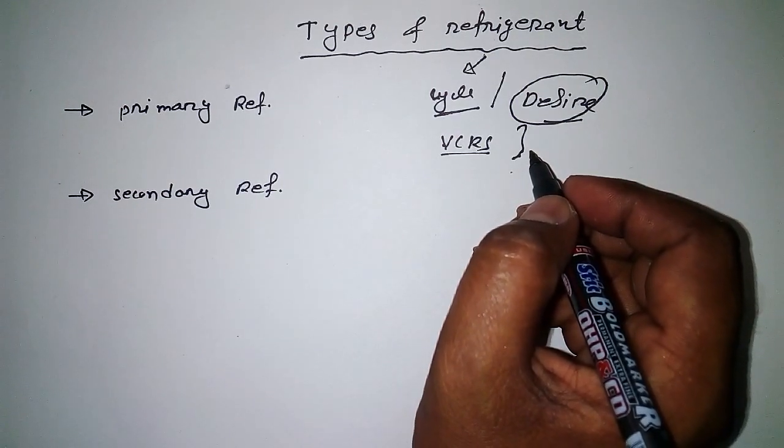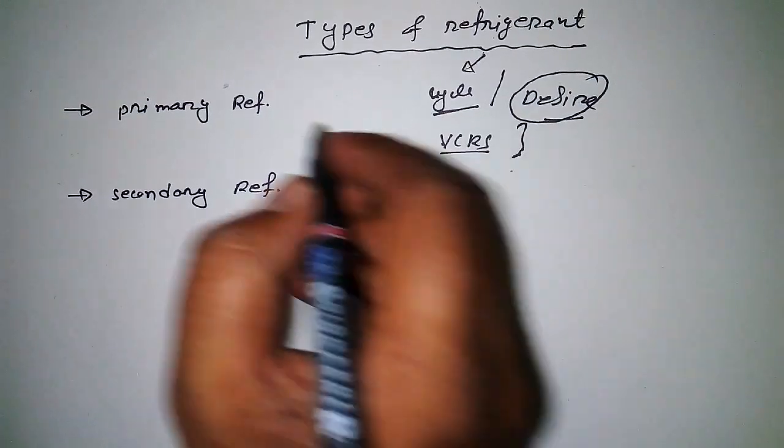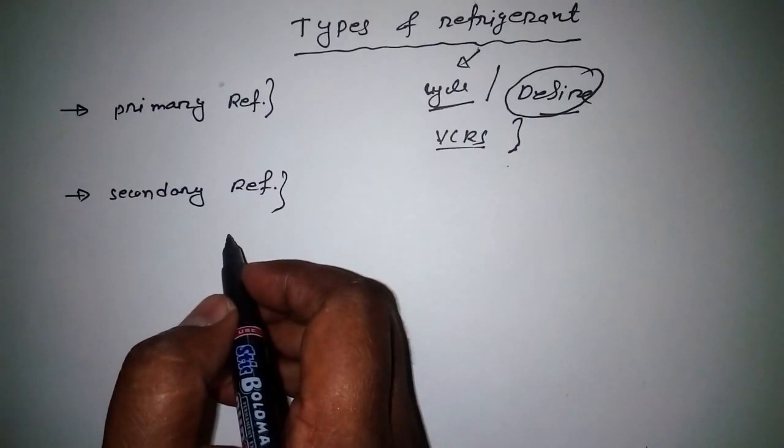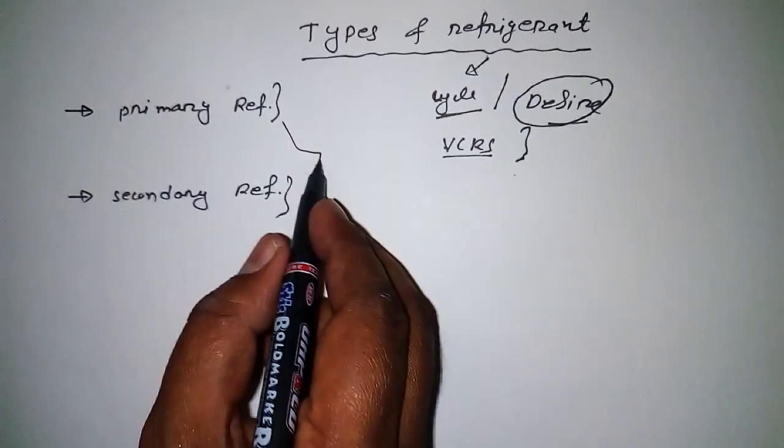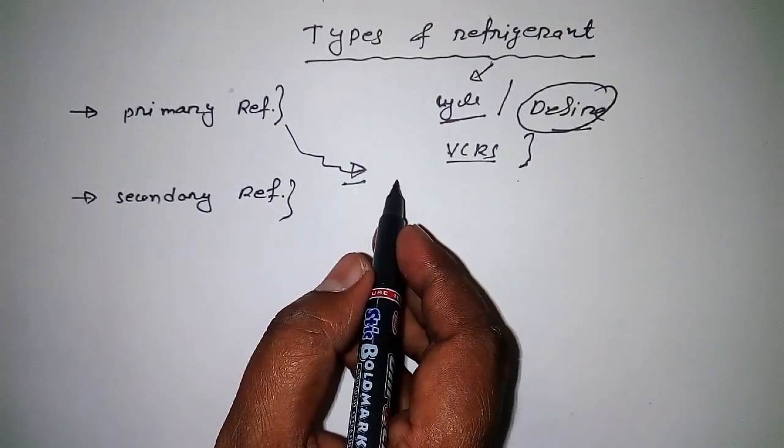We're going to discuss two types of refrigerant: primary refrigerant and secondary refrigerant. So what is primary refrigerant? That is important.